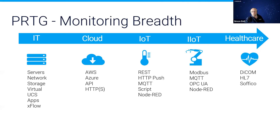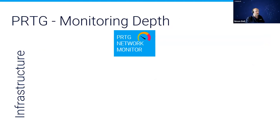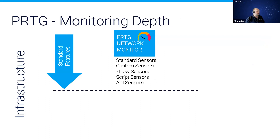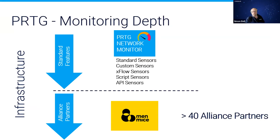As well as being very broad, PRTG also goes deep into the monitored infrastructure using standard and custom sensor types, APIs, and scripts. But occasionally administrators need to look a little bit deeper, and this is where our alliance partners come in. We have something like 40 alliance partners, and Men and Mice are a great example of that alliance relationship. With that, I'll hand over to Sigfus to tell you more about Men and Mice and their products.